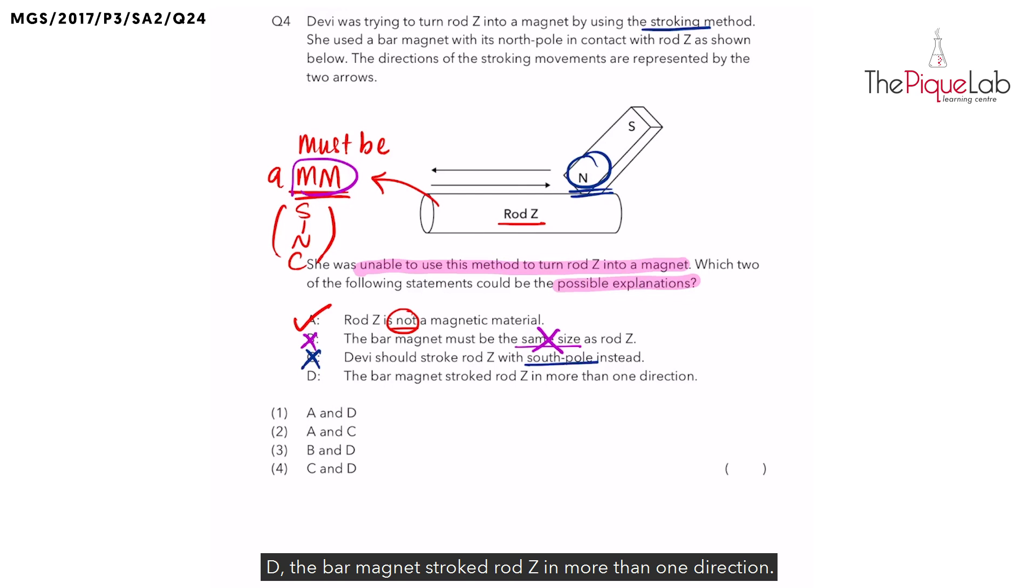Option D: The bar magnet stroked rod Z in more than one direction. If we look at the diagram, she's using the bar magnet to stroke the rod in how many directions? Yes, direction number one and direction number two. So there are two directions over here. Is this a correct method to stroke? No. She should use the same pole of the magnet to stroke the rod made of a magnetic material in how many directions? Yes, only one, not more than one. Since she stroked the rod in more than one direction, this could be the reason why rod Z couldn't turn into a magnet.